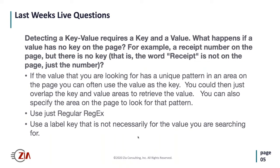You can also use regular expressions. If you're trying to get a value for a particular field and it has a unique pattern — like a social security number, VIN number, policy number, or patient number — you can just use regex, and it will look for that pattern on every single page. You can also use a label that doesn't necessarily belong to the thing you're looking for. For example, if you're finding a due date, you don't have to use the label 'due date' — if there's another consistent label nearby, just use whatever gives you consistency.